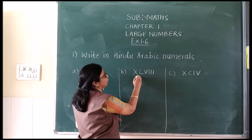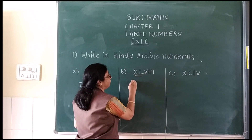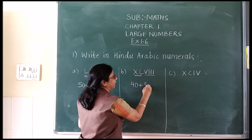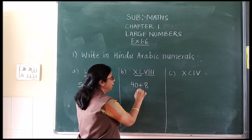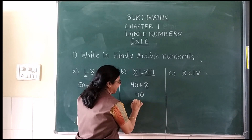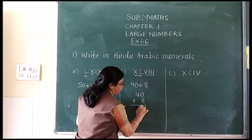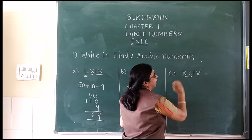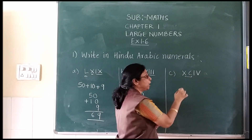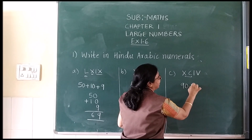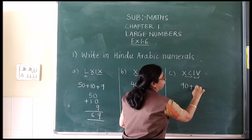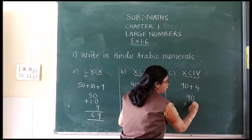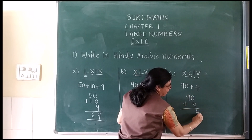Second sum: XL stands for 40 and VIII stands for 8. So 40 plus 8 = 48. Third sum: XC stands for 90 and IV stands for 4. So 90 plus 4 = 94. In this way you can convert Roman numerals into Hindu Arabic numerals.